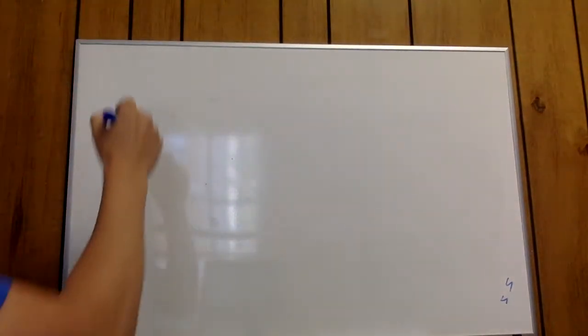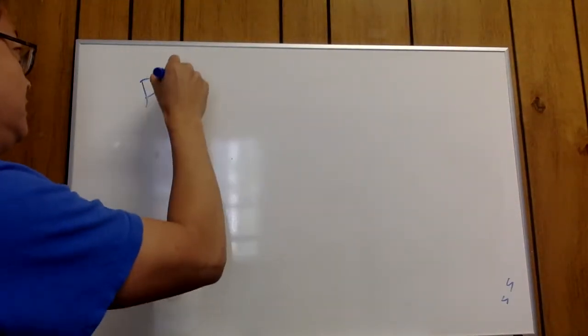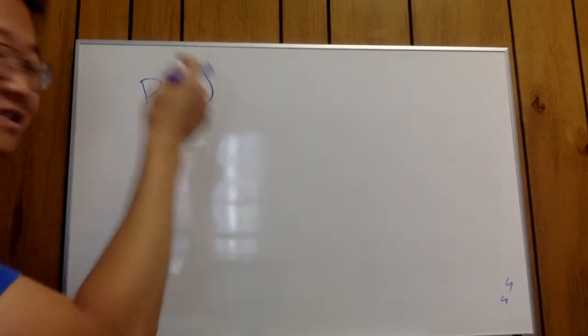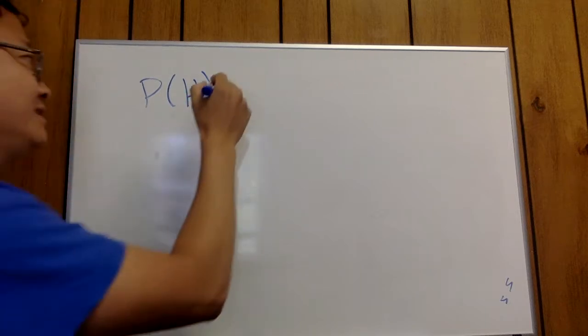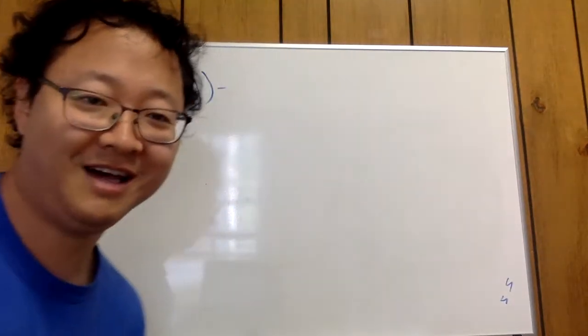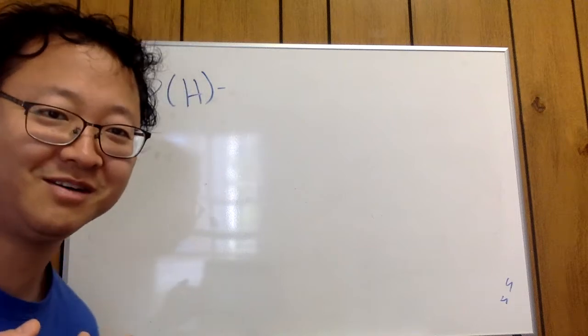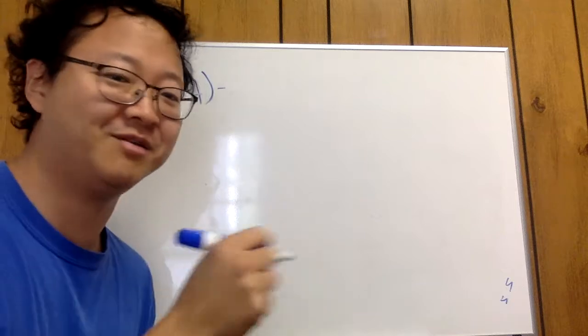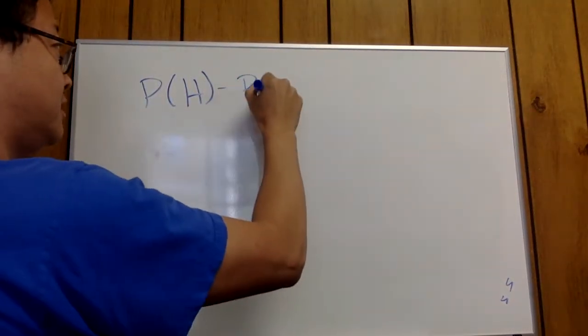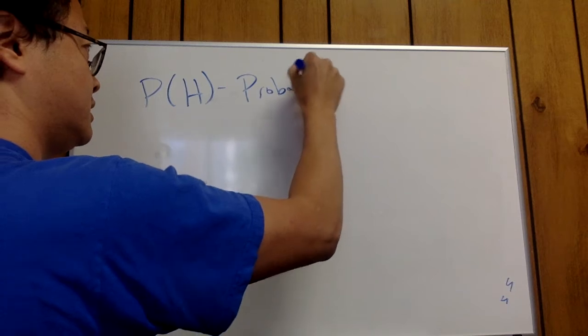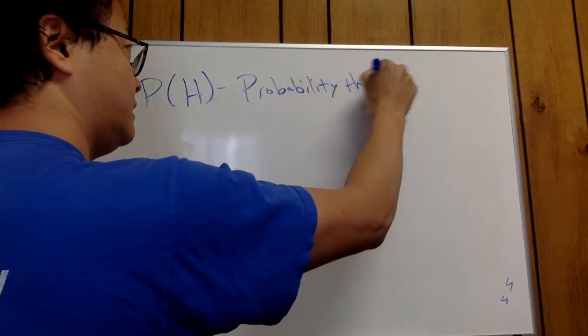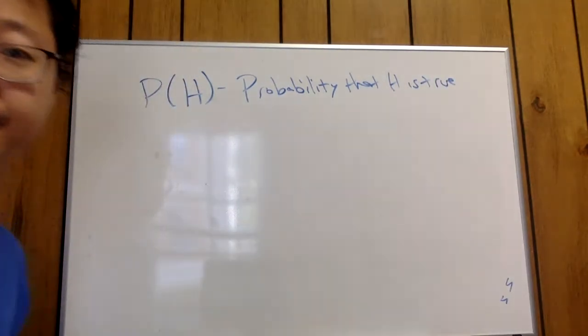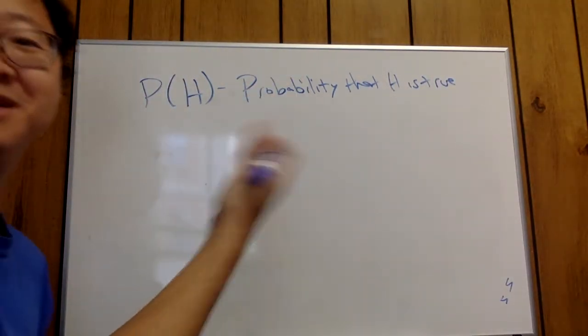So let's start with P(H). What does that mean? And again, I encourage you to be making your own notes, like just writing down as I write. It helps you remember if you're writing down what I'm writing down. So this one just means probability that H is true. Okay, even more simple is the probability of H.